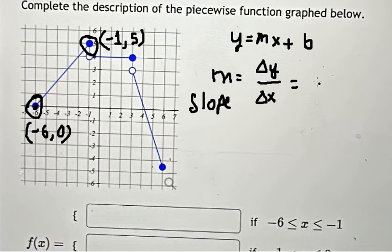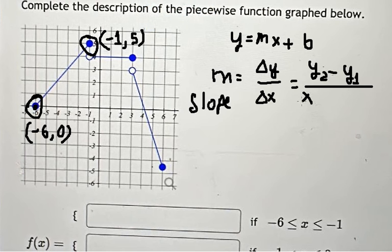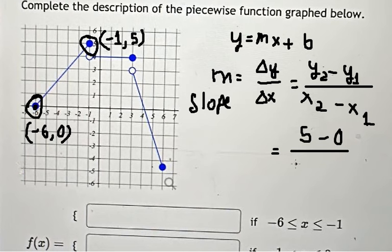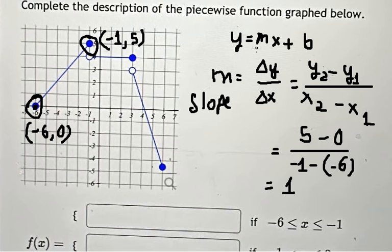So m equals (y₂ - y₁) / (x₂ - x₁). y₂ is five, y₁ is zero, divided by x₂ which is negative one, minus x₁ which is negative six. We calculate this and get five over five, which equals one. So the slope m = 1.